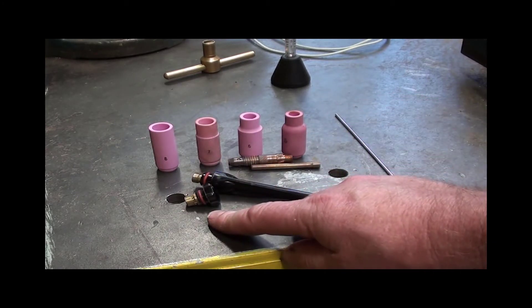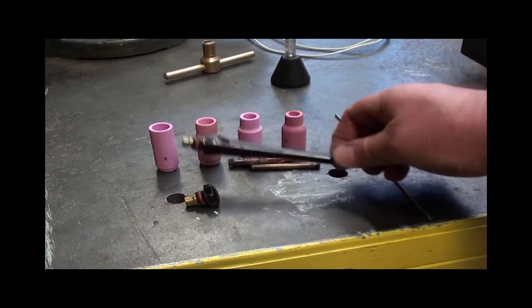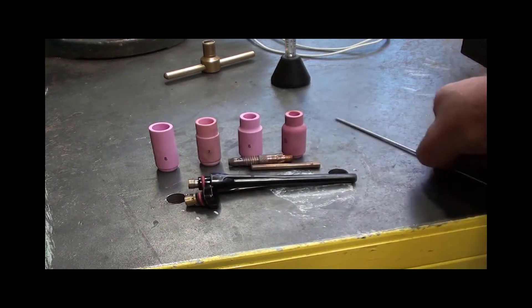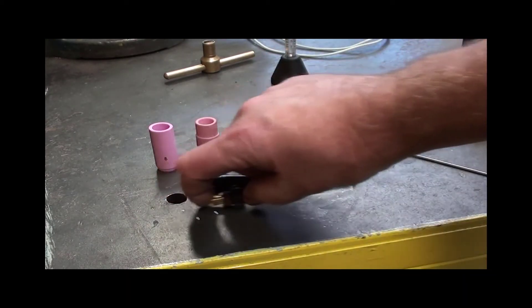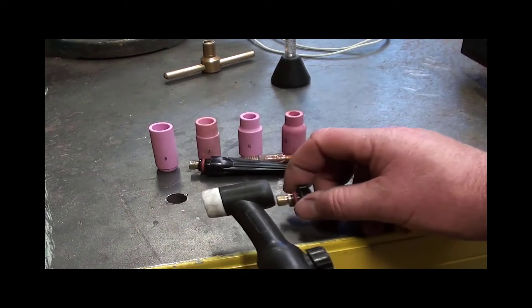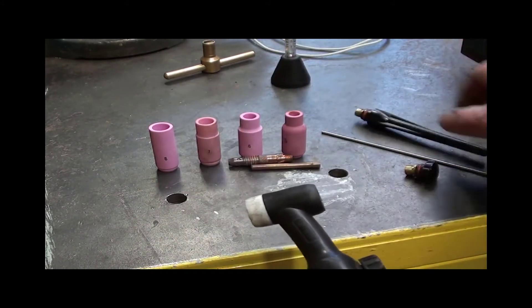Obviously having the smaller one allows you to get into very tight spaces when you want to do some welding. Otherwise, just put a standard one on it because it allows you to put a whole electrode up on the inside of it. Whereas if you use the small one on the torch, you're going to have to have quite a short tungsten to get it into the torch.